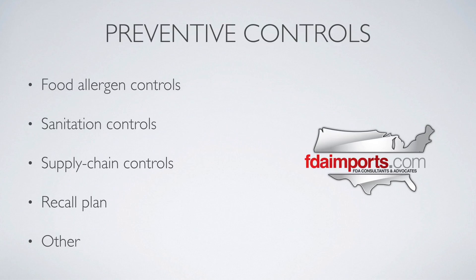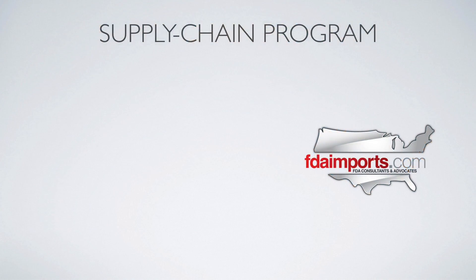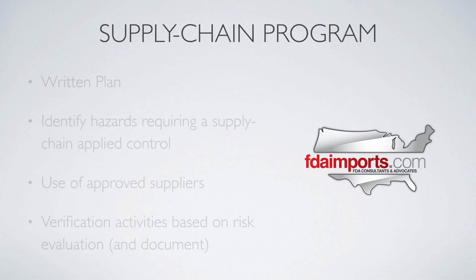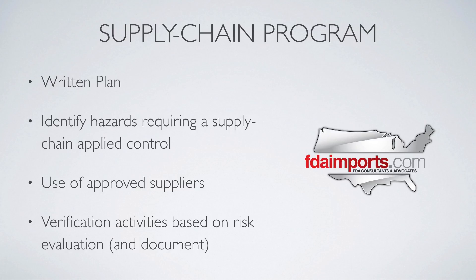Your food safety plan also requires a supply chain control program. This is very similar to FSVP in the import-export world, though under HARPC it only applies to raw materials and ingredients rather than complete foods. The supply chain program requires: a written plan, identification of hazards requiring supply chain controls, use of approved suppliers, and verification activities documented based on your risk evaluation. You must also oversee the entire operation — monitor the facility, monitor plan implementation, perform corrective actions for any deviations, and verify those corrective actions were effective.